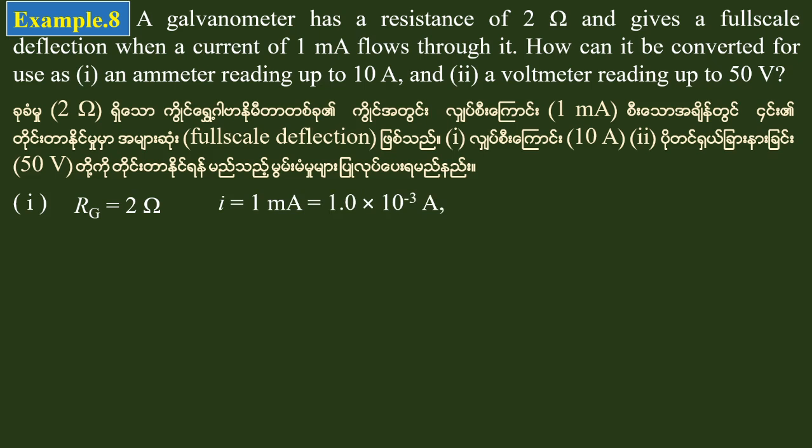The galvanometer coil resistance is small i, equal to 1 mA. Taking 1 mA, there is 1 into 10 to the power minus 3 amperes. These are the solutions for the galvanometer, so in this case we have the solution for the galvanometer over 10 mA range.